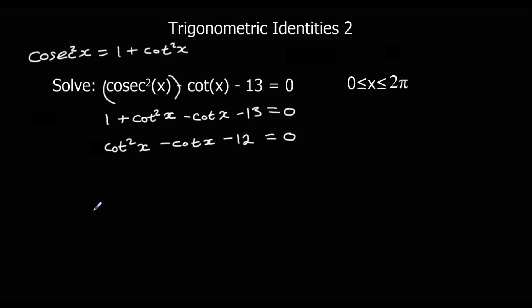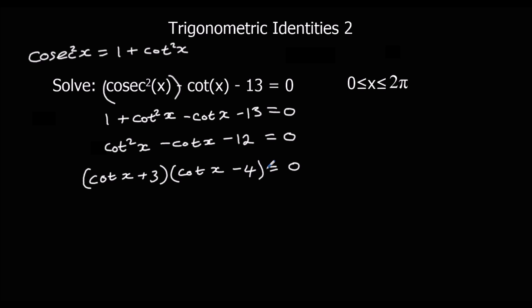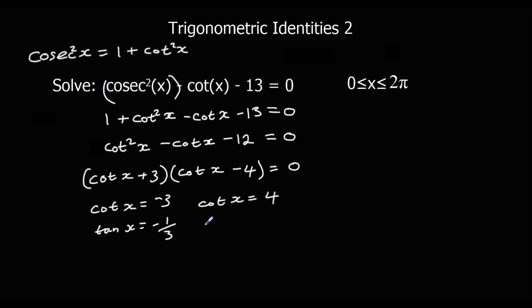We can factorize — cot x in both brackets. What multiplies to make −12 and adds to make −1? We get +3 and −4. So (cot x + 3)(cot x − 4) = 0, meaning cot x = −3 or cot x = 4. We can't put cot into a calculator, so we change it to tan by flipping both sides: tan x = −⅓ or tan x = ¼.